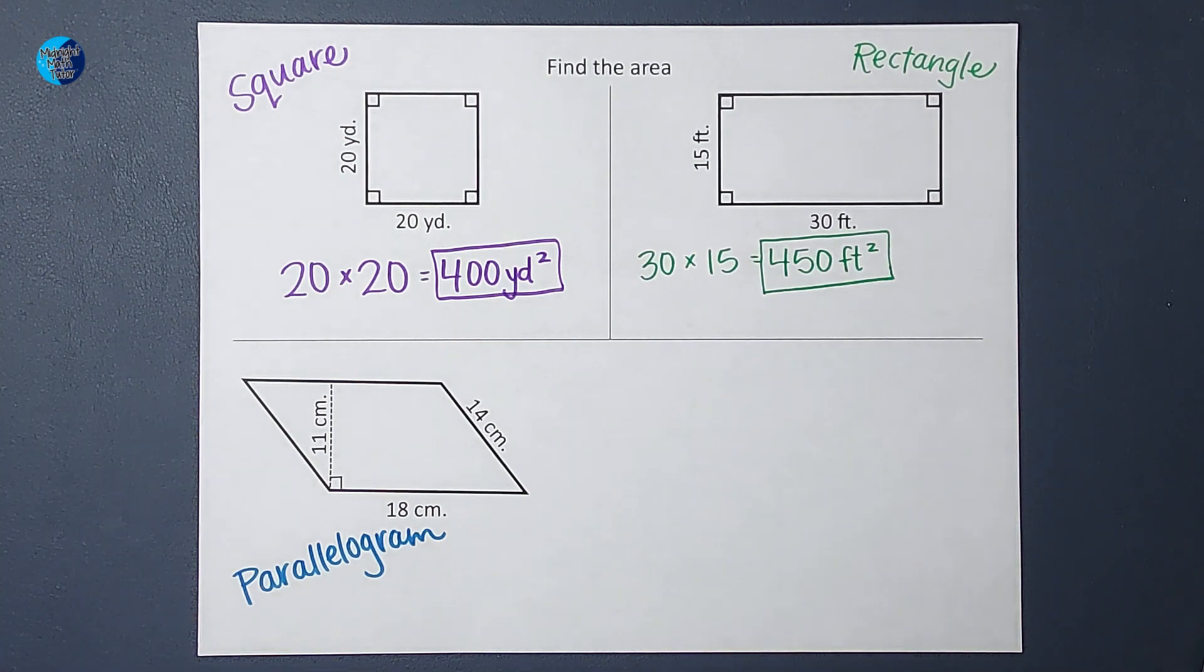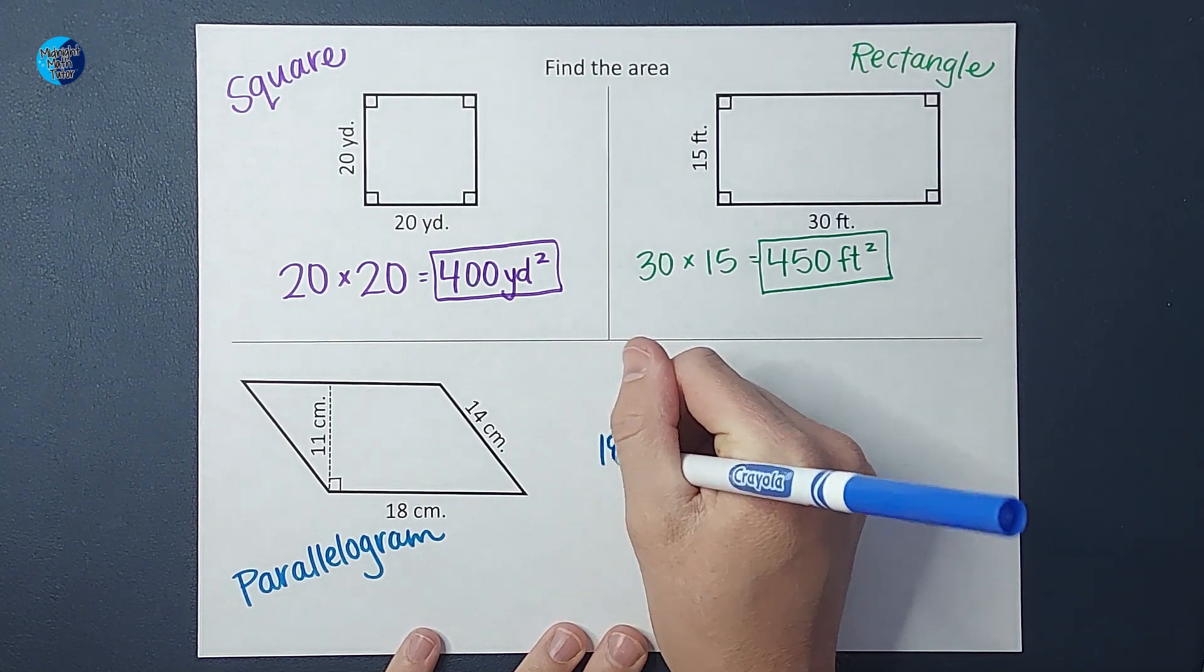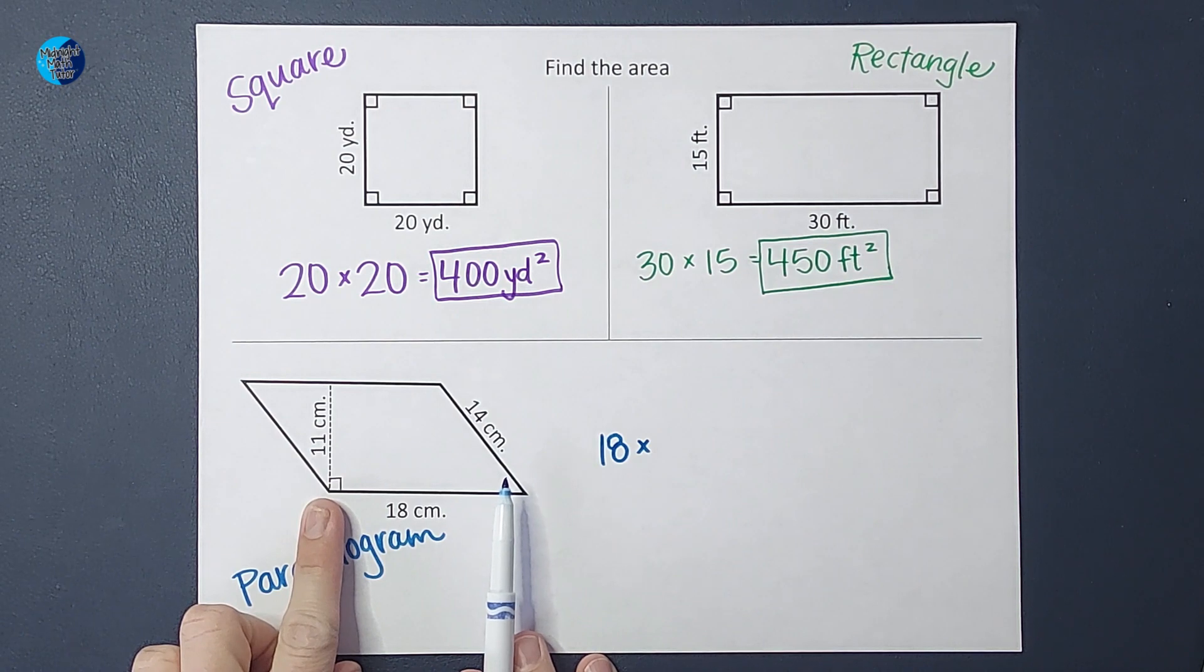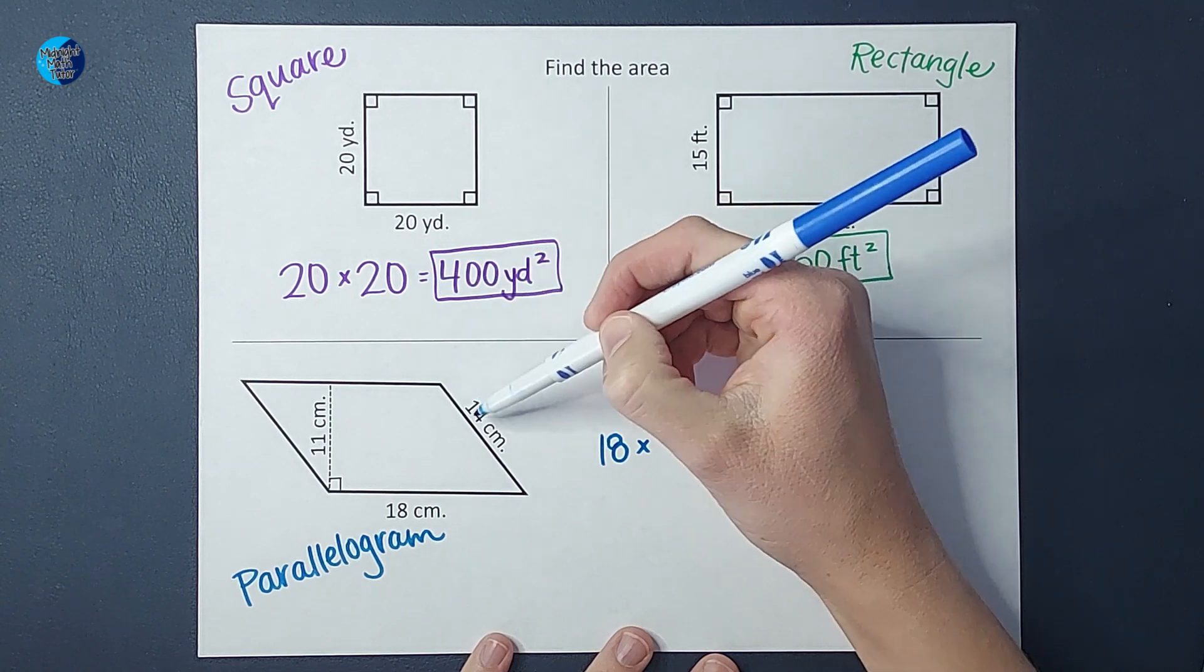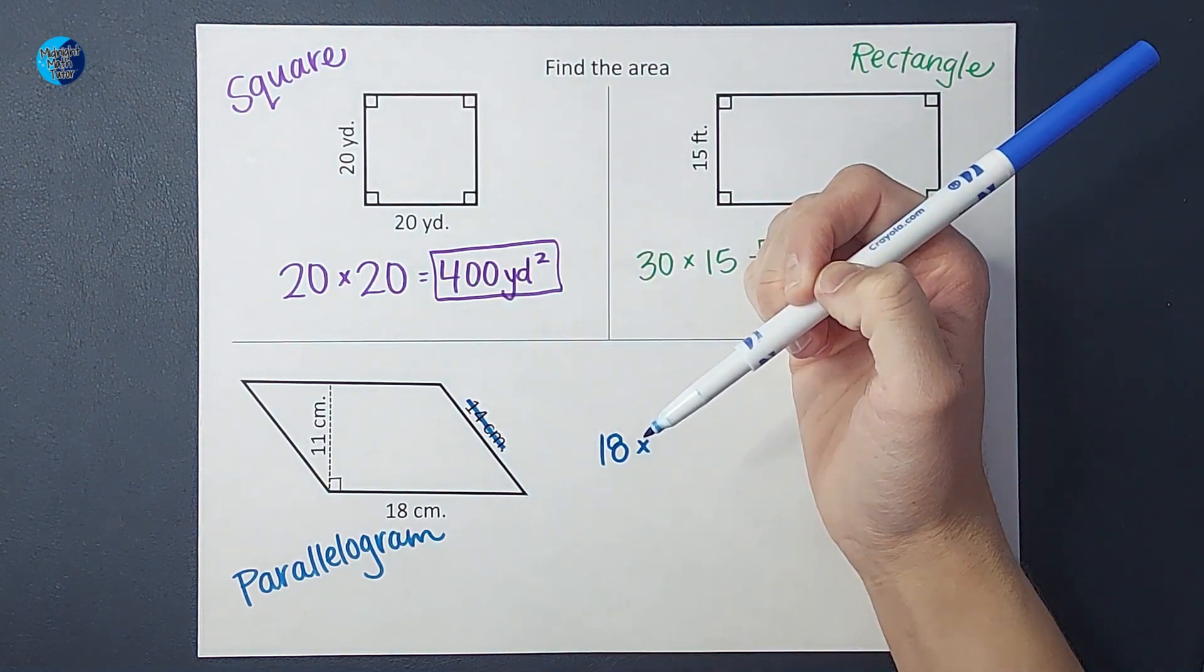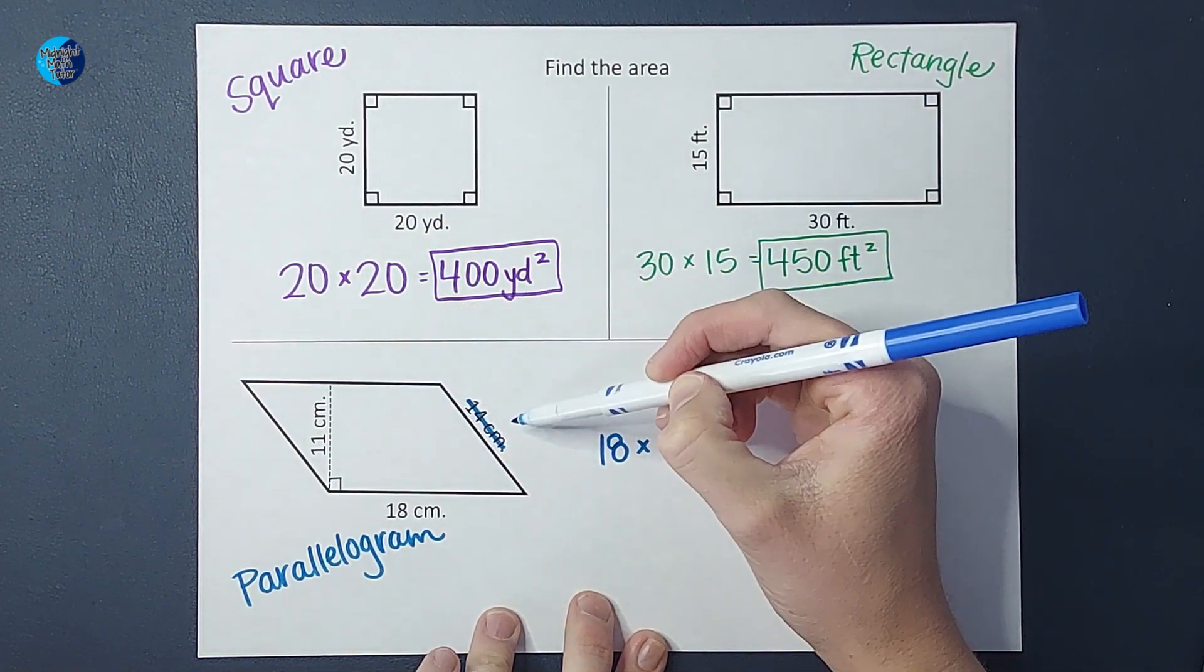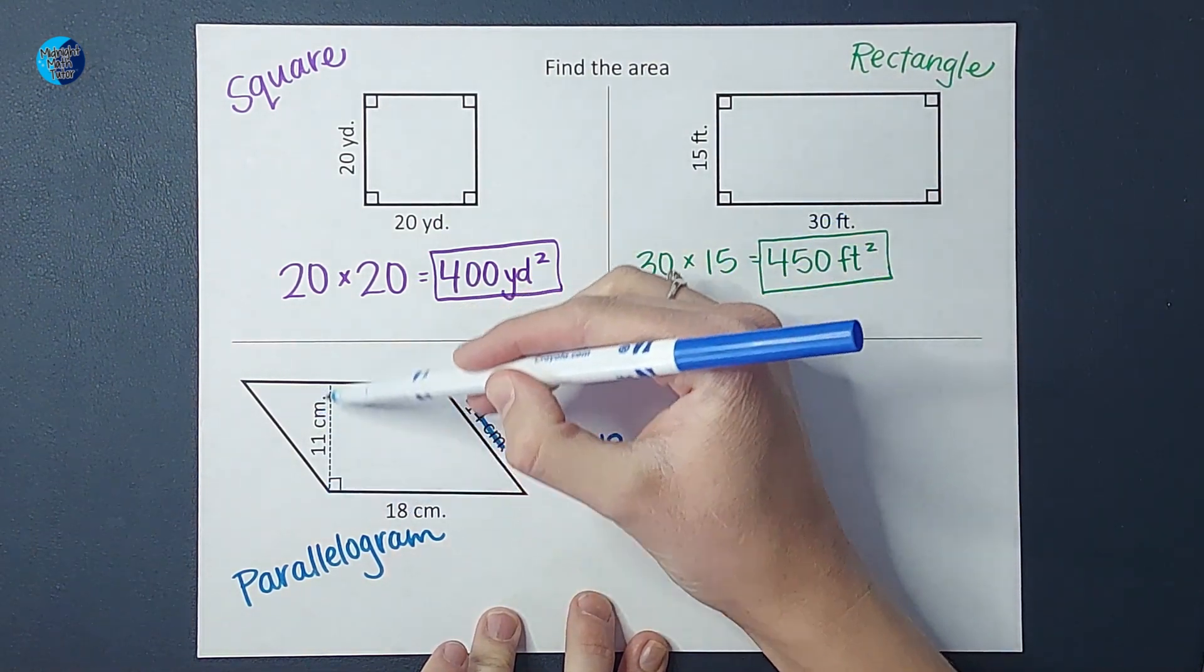All right, last one. We have our parallelogram here, which is also going to be base, 18, times height. Now if you're looking here and you're like, 'oh wait, which one is height?' Well, this one gives us the slant, which—thank you for giving us that information, but we don't need it for the area. Remember that if I were to move this over here, it would be a rectangle, and I would do base times that height.